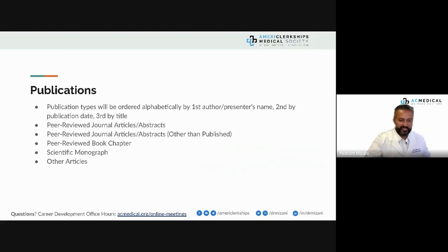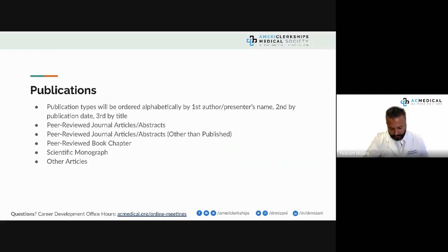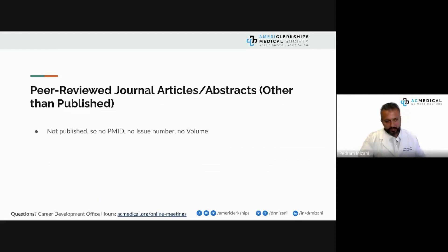The different sections of the publication are: peer-reviewed journal articles and abstracts, peer-reviewed journal articles, abstracts other than published, peer-reviewed book chapters, scientific monographs, and other articles. Those are the different types of publications.